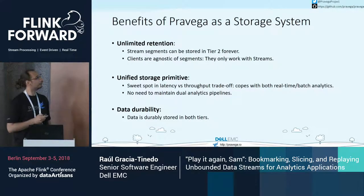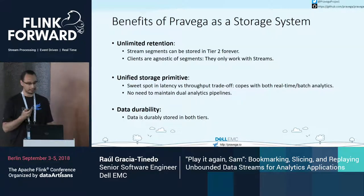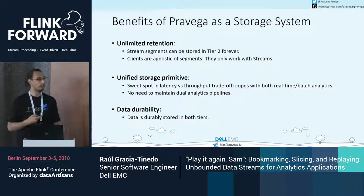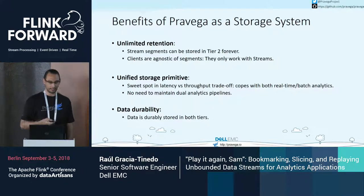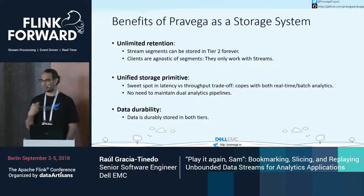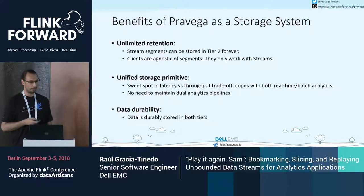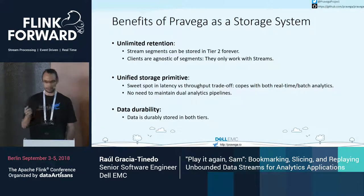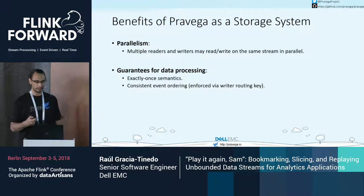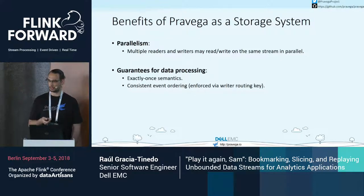Let's wrap up Pravega's main benefits. Pravega provides unlimited retention — as long as there is storage space in Tier 2, we can keep writing data. It is a unified storage primitive, so applications can read from Pravega whether reading from the tail of a stream or accessing old historical data. It allows write parallelism and read parallelism for higher throughput. And it provides guarantees such as exactly-once semantics and consistent event ordering based on routing key.